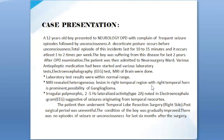After OPD examination, the patient was admitted to the neurosurgery ward. Various anti-epileptic medications were started, and laboratory tests, electroencephalography, and MRI of the brain were performed. Laboratory test results were within normal range. MRI revealed a heterogeneous lesion in the right temporal region with right temporal horn prominence, with a possibility of ganglioglioma.